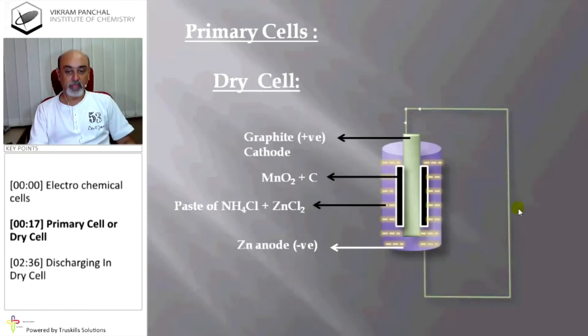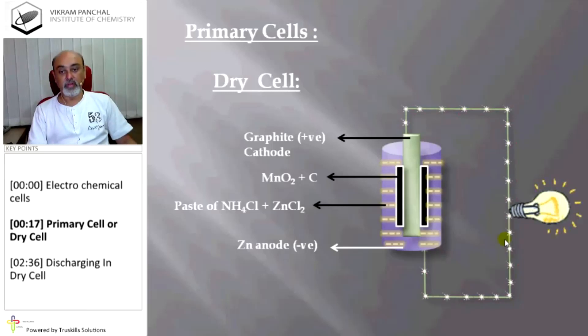If you connect these two, then the electricity current will pass through and oxidation reduction takes place inside the cell. Due to redox reaction you get electricity. This is the function of dry cell.